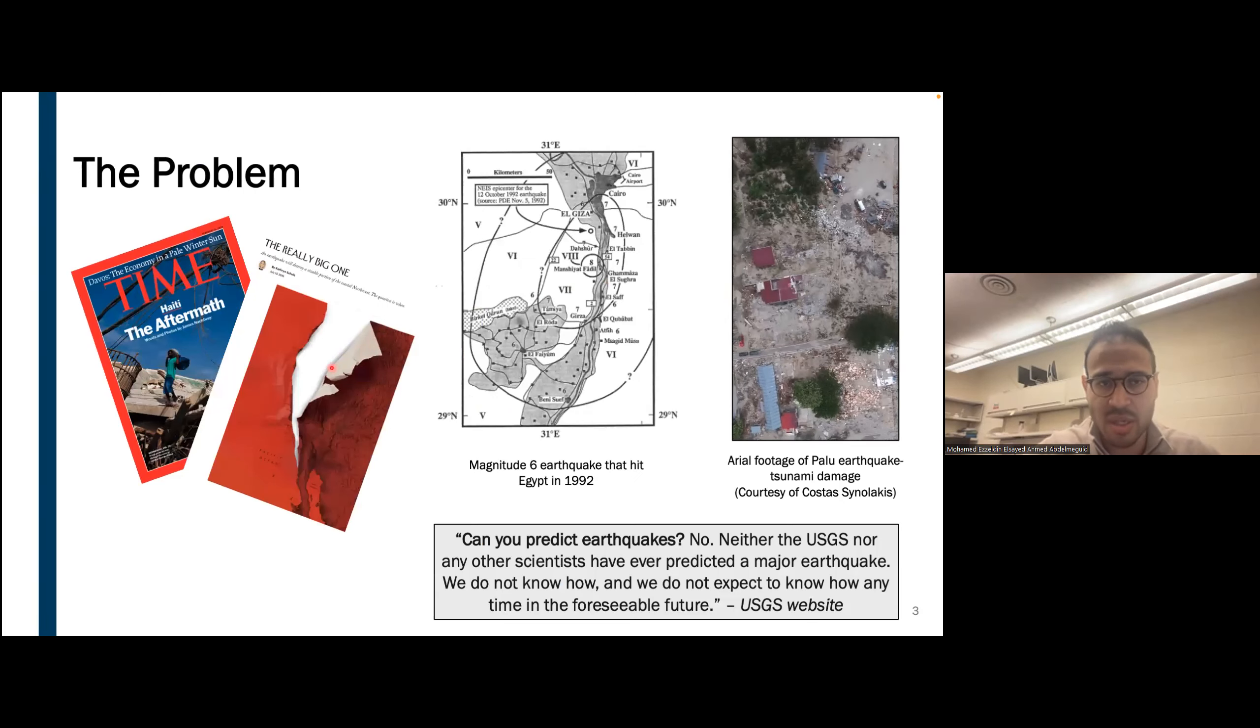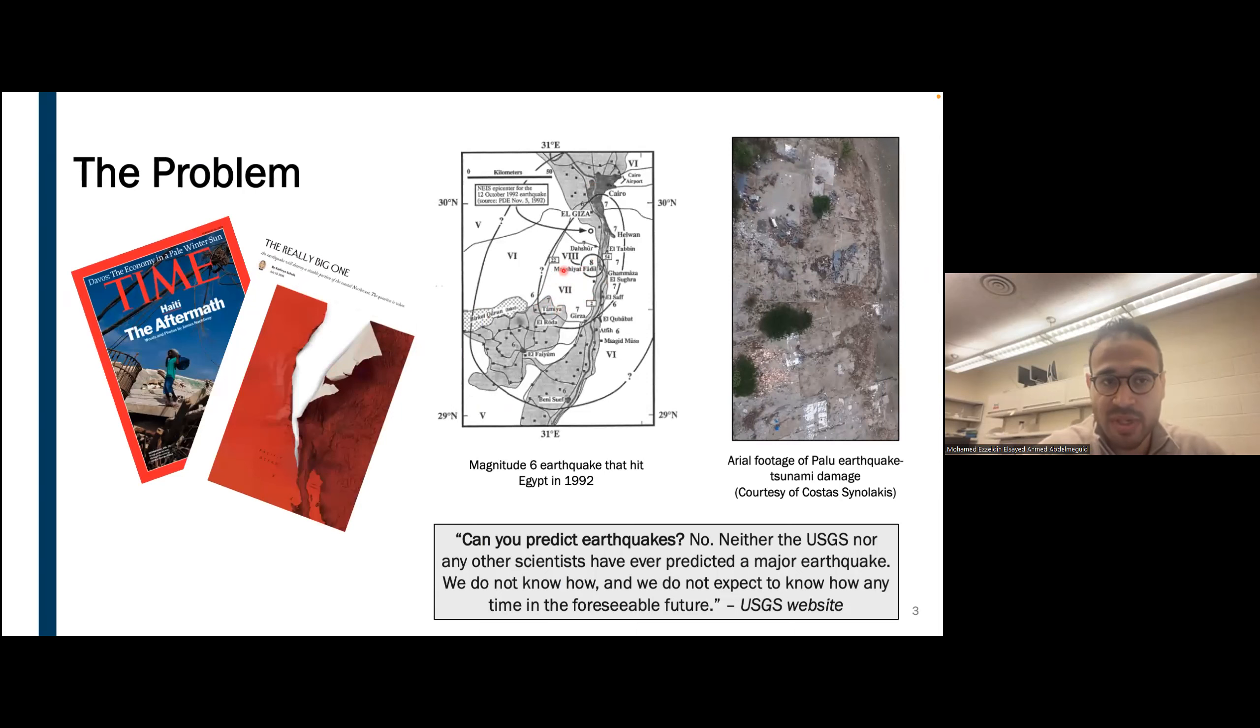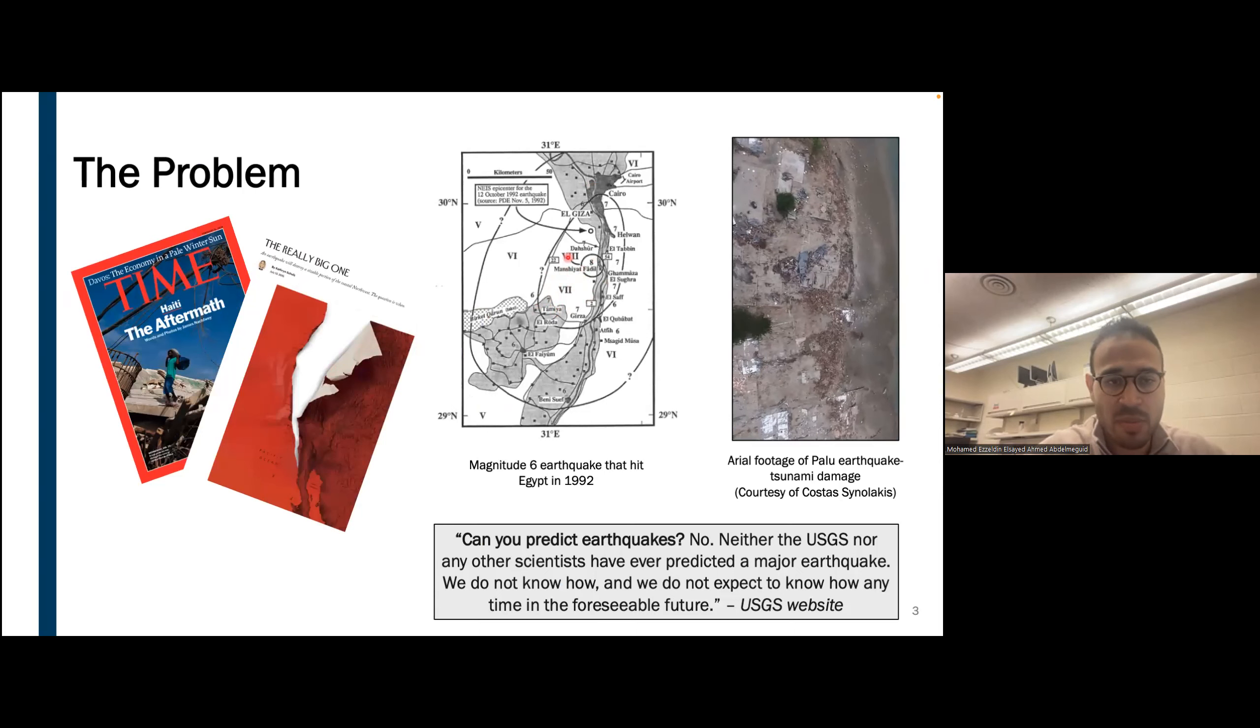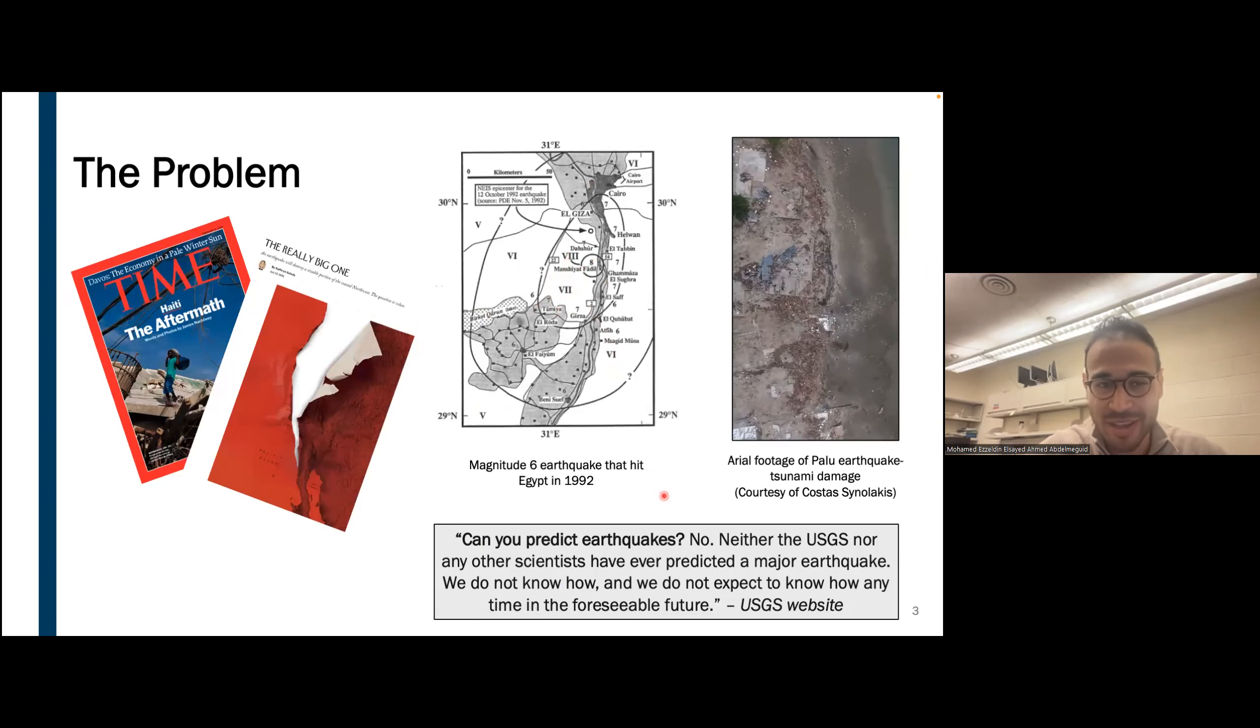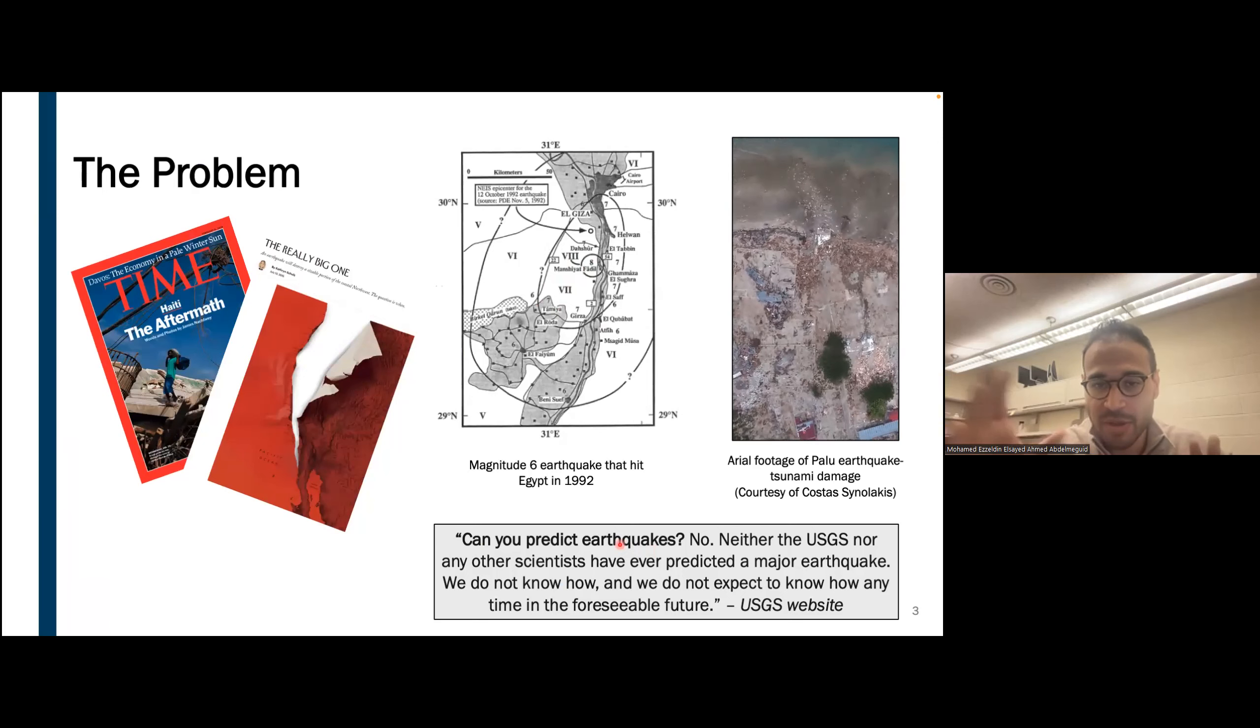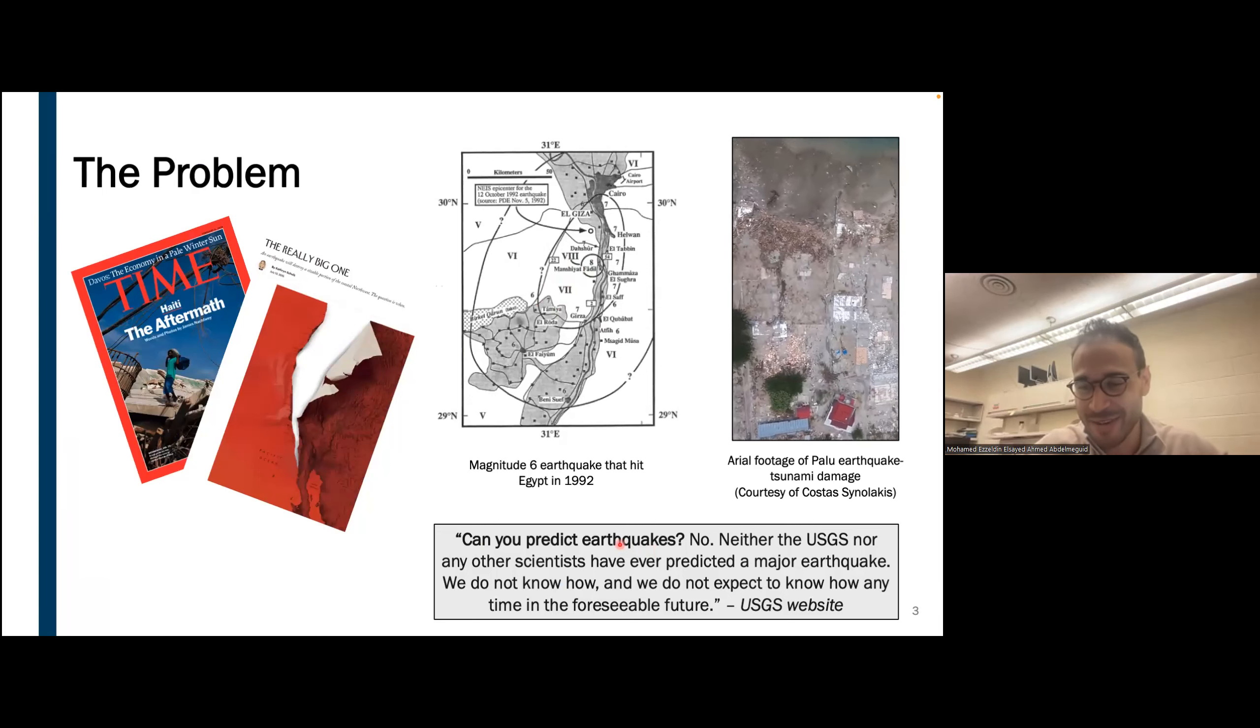Natural hazards like earthquakes and tsunamis cause significant humanitarian impact and economic damage. The year I was born in Egypt, it got hit by a devastating magnitude 6 earthquake that damaged a significant portion of the area my family lived in. While it would be nice to predict when the next earthquake will happen ahead of time, as the U.S. Geological Survey puts it, it's an impossible task that is not going to happen in the foreseeable future. The main reason is that we lack the data. The time span of an earthquake cycle is usually centuries and even more, and the earliest recorded data point in modern history is only 135 years ago.